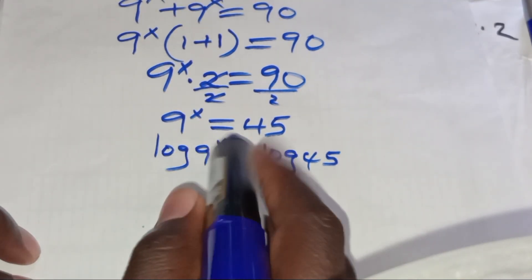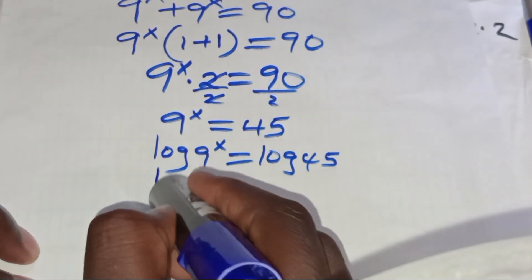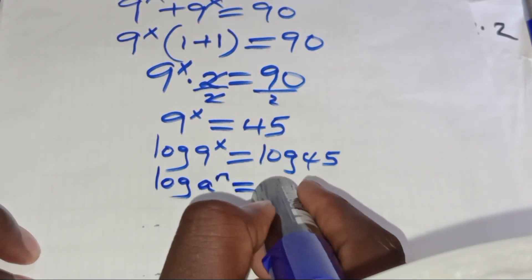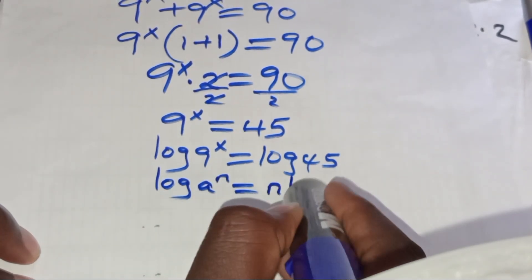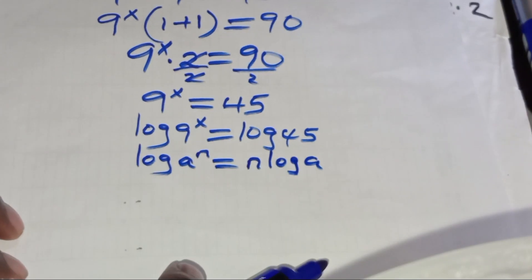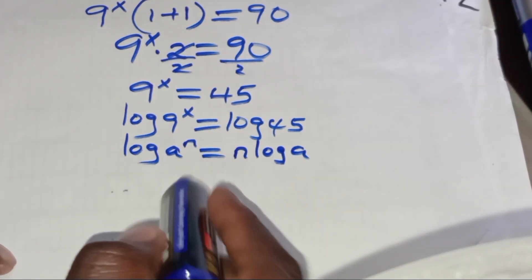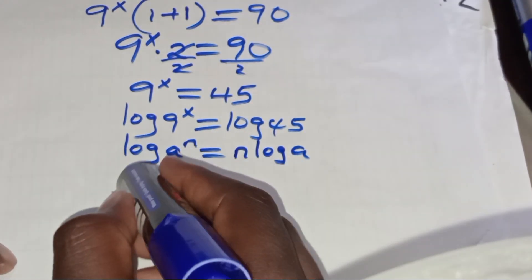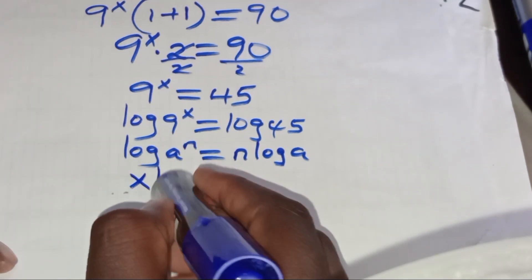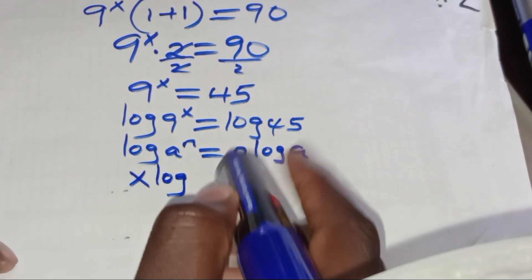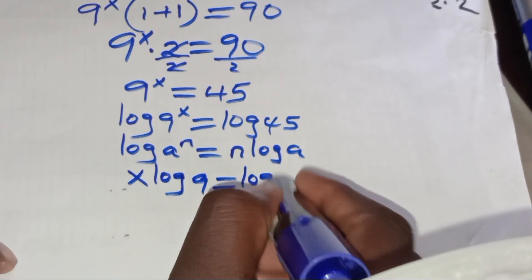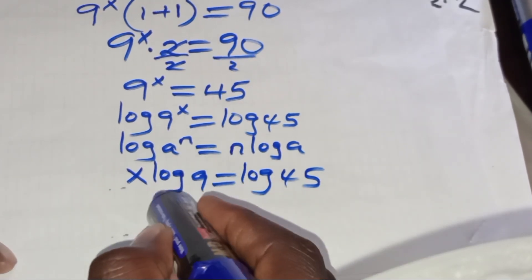log 9 to the power x is in the form of log a to the power n, which we can express as n·log a. Applying this power rule property of logarithms, log 9 to the power x becomes x·log 9, and this is equal to log 45.